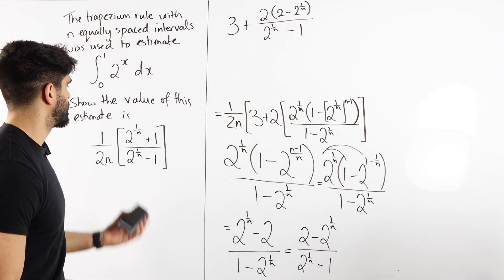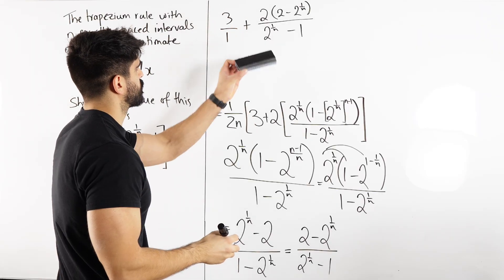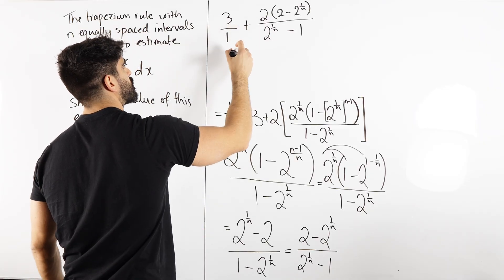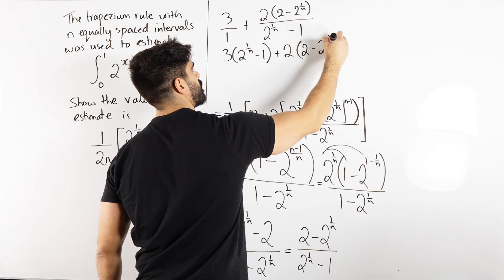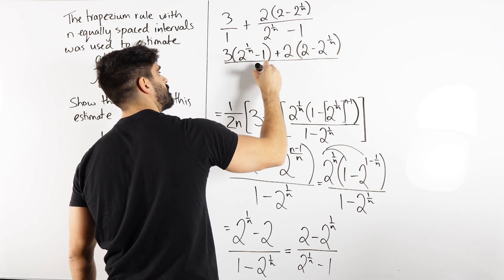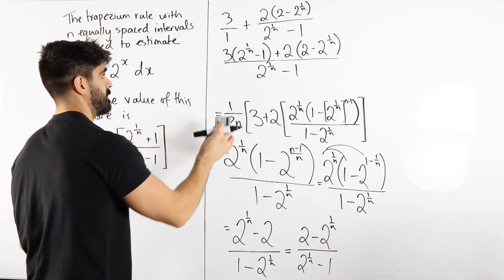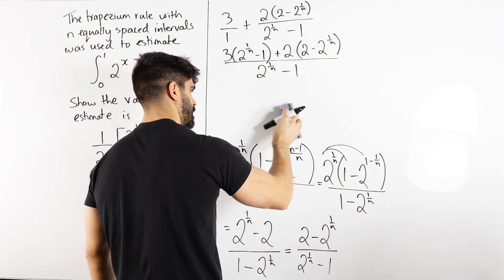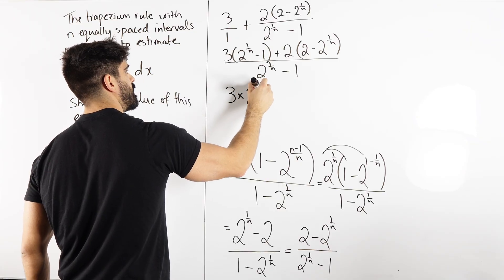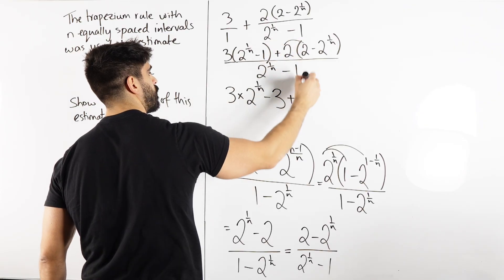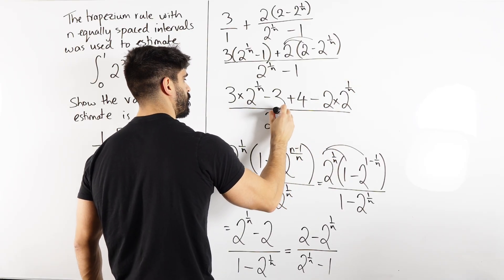So I think what we're going to have to do is bring everything into one fraction. This is clearly all in one fraction. So let me write this as 3 over 1. And then we're going to have to cross multiply. Now remember, there's this 1 over 2n there, so we have 3 lots of 2 to the power of 1 over n minus 1 plus 2 lots of 2 minus 2 to the 1 over n, all over, times these together. So just remember, this is just what's in here. We're going to have to remember that the 1 over 2n is on the outside.